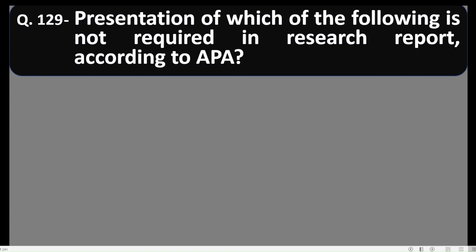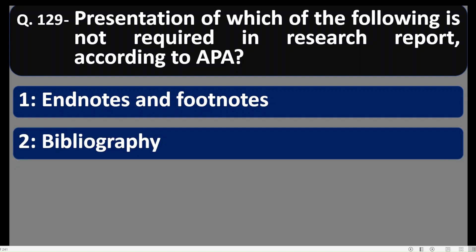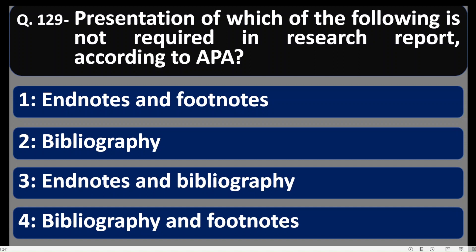Question 129: According to APA, which of the following is not required in a research report? Options: 1) endnotes and footnotes, 2) bibliography, 3) endnotes and bibliography, 4) bibliography and footnotes. APA says there is no need to write endnotes and footnotes in the research report; instead, everything should be written in the bibliography. So option number 1 is correct.